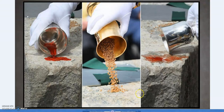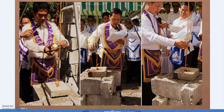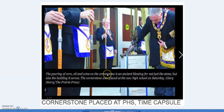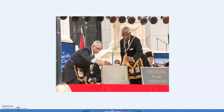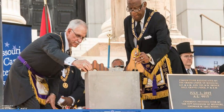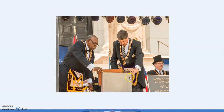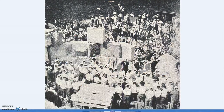Grain, oil, and wine are used in the cornerstone ceremony — this example appears to be from the Philippines, which has a strong Masonic tradition. At Paris High School somewhere in Illinois, the Masons laid the cornerstone and poured corn, oil, and wine on it. Americans tend to use corn as the grain rather than wheat or barley. In these ceremonies, the cornerstone is tested with the plumb, the level, and the square — an important part of the ritual.